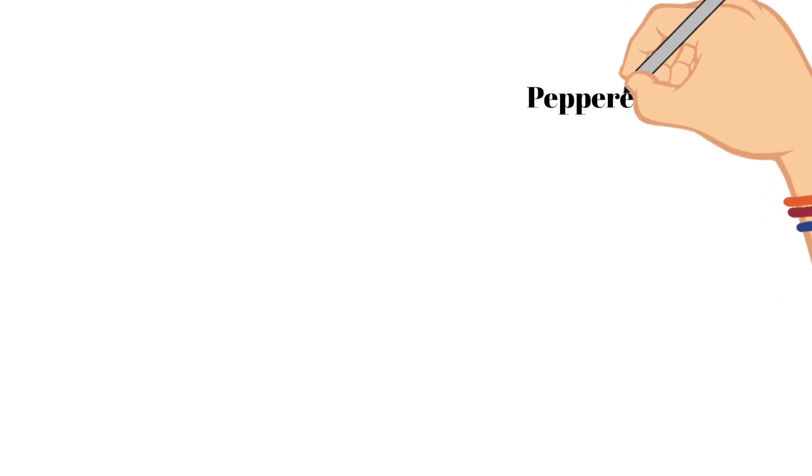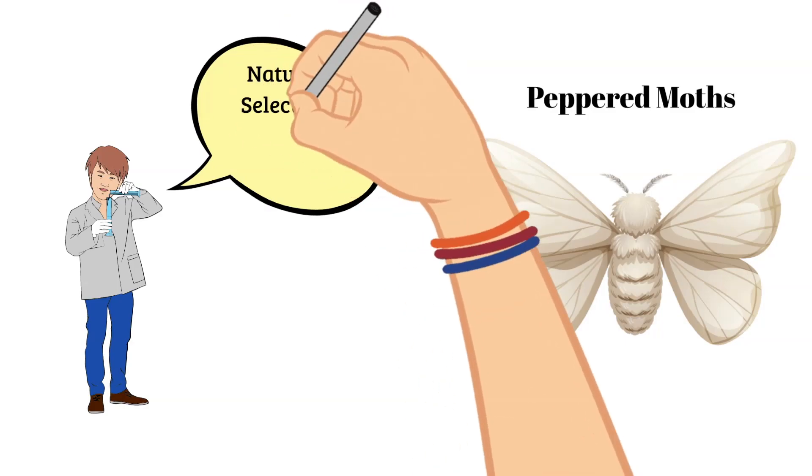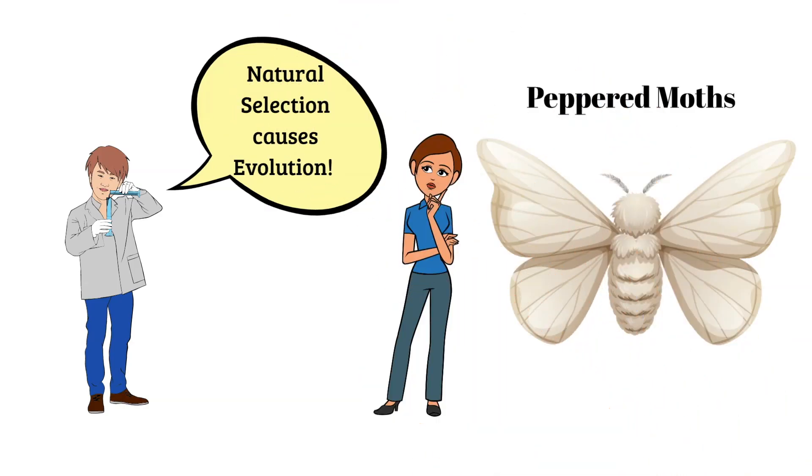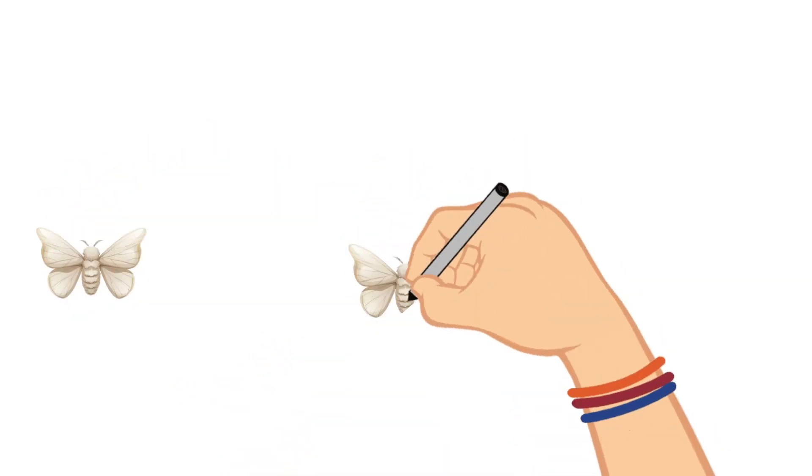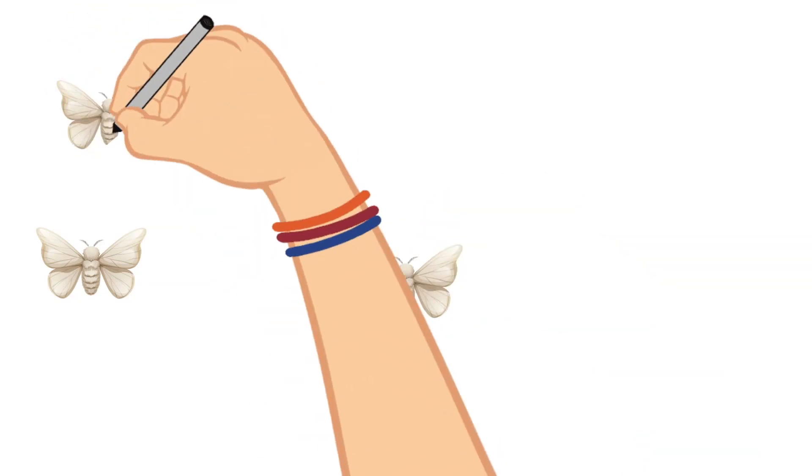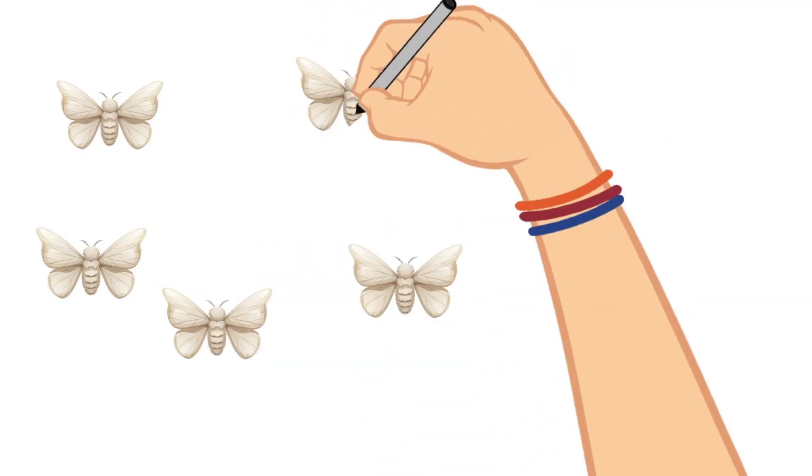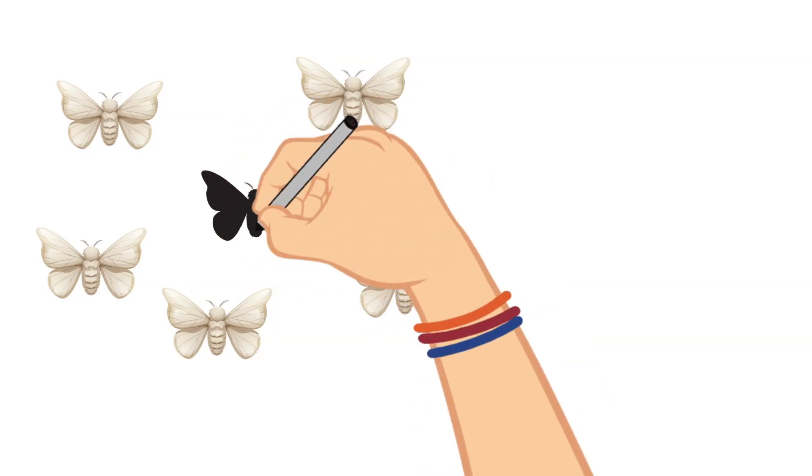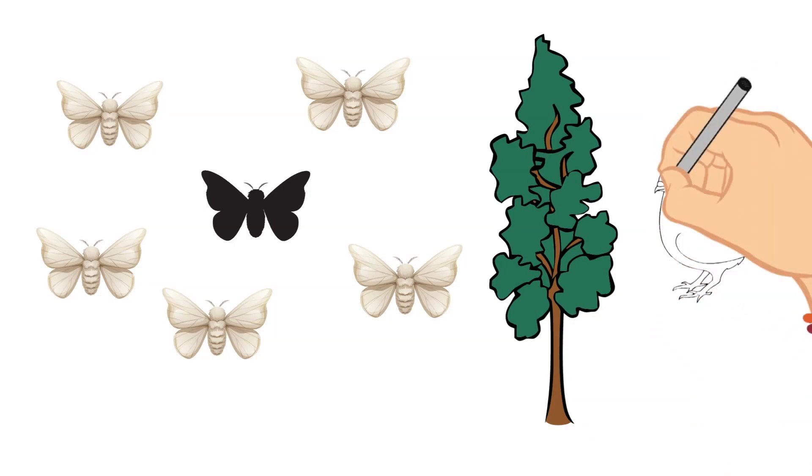There is a famous case study that supports this idea of natural selection and that is the study of peppered moth evolution. Now, there are many other examples but often times this is the main one that scientists come back to when they're talking about natural selection. In the past, peppered moths were mostly light in color and there were only a few moths that had dark colors. At first, these light colored moths survived better because they were camouflaged against the light color of the trees, and because they could camouflage against the trees it made it hard for predators like birds to see them.